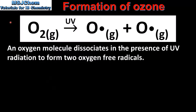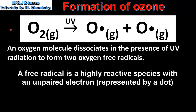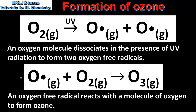Next we look at the formation and destruction of ozone. Starting with the formation: in the first step an oxygen molecule dissociates in the presence of UV radiation to form two oxygen free radicals. In the next step, an oxygen free radical reacts with a molecule of oxygen to form ozone. Here we can see our oxygen free radical reacting with an oxygen molecule to form a molecule of ozone.